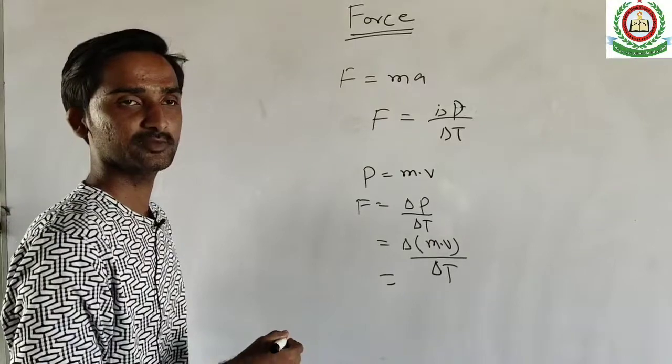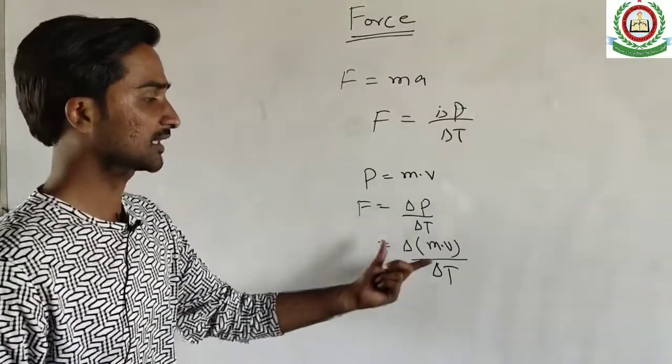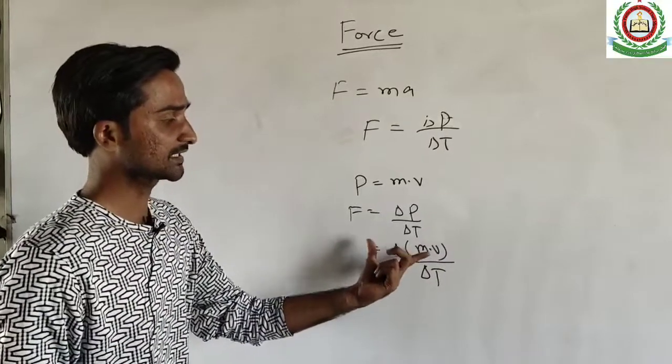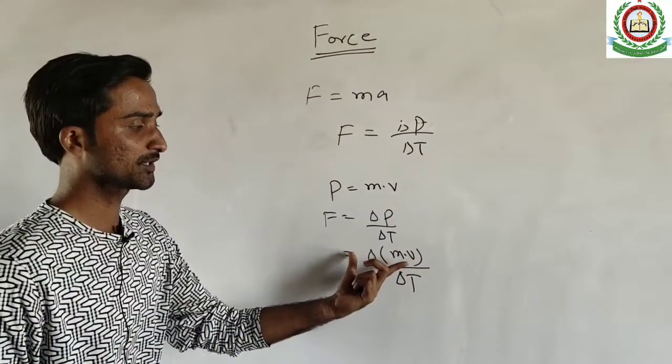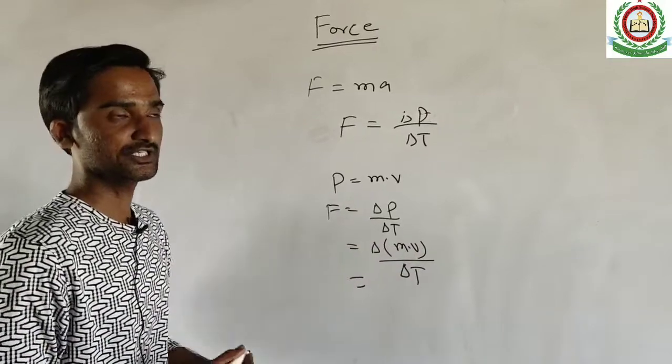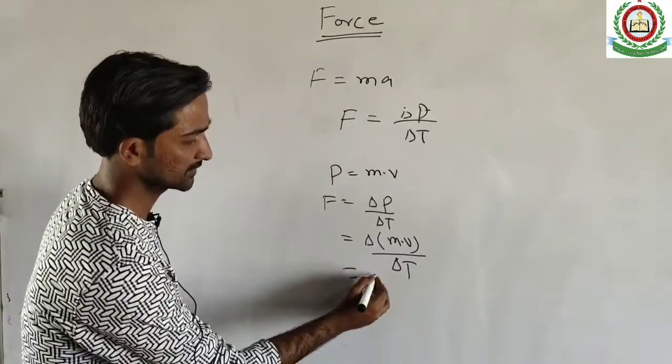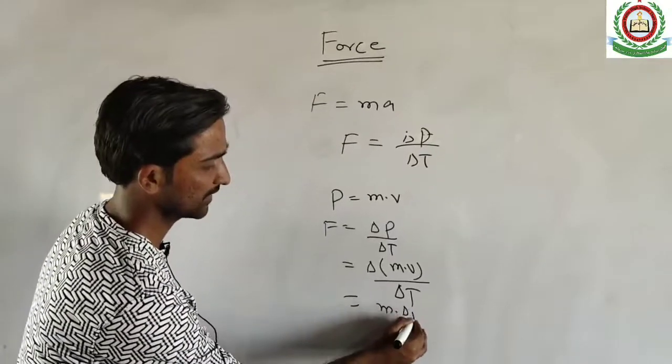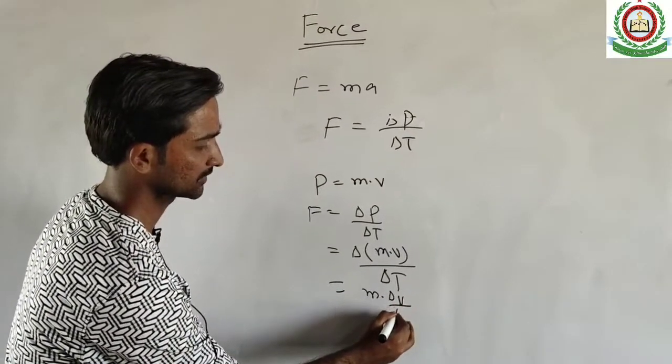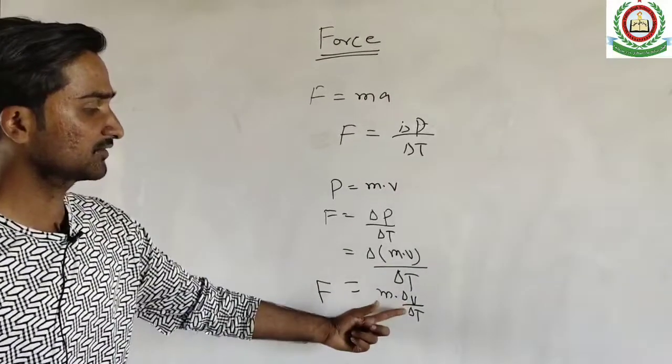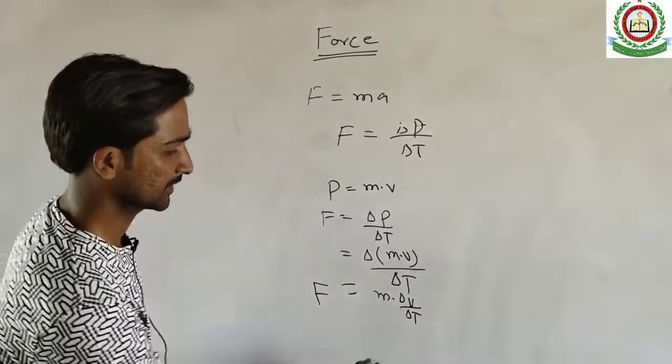If we think that mass remains constant, then the change in momentum will be due to velocity changing. This gives us the equation m dot delta v upon delta t.